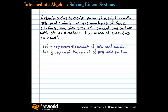Let's begin by identifying variables. We'll let X represent the amount of 30% acid solution, and we'll let Y represent the amount of 10% acid solution. The goal using two variables is to set this up as a linear system with two equations.